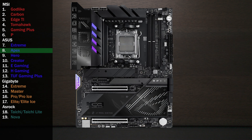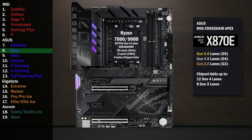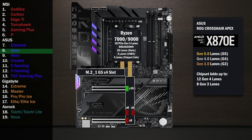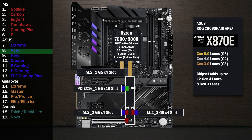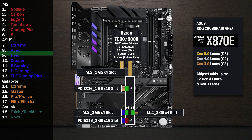Here's the PCIe lanes for the Asus X870E Crosshair Apex. Four lanes at Gen 5 go to the main M.2 slot. Sixteen lanes go to a PCIe switch connecting the first x16 slot, two M.2 slots, and a second x16 slot. If only the first slot is used, all lanes go to that slot. If the second slot is used, the first drops to eight lanes and eight lanes go to the second. If the third M.2 slot is used, the second x16 drops to four lanes and four lanes go to the third M.2. If the second and third M.2 slots are used, the second x16 drops to zero lanes and four lanes go to each M.2.